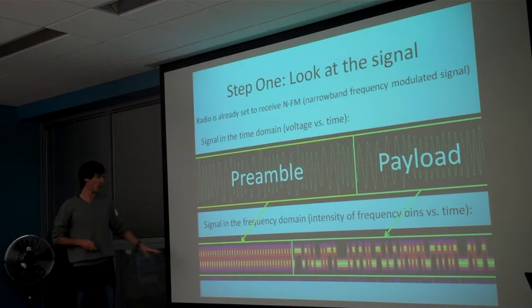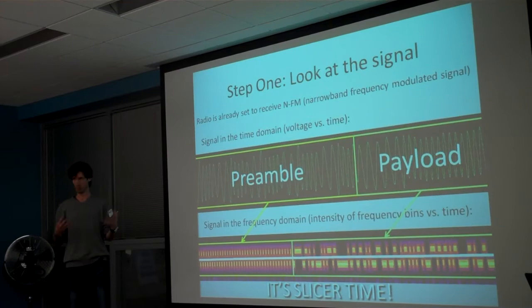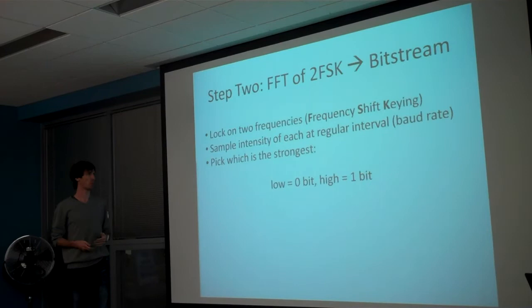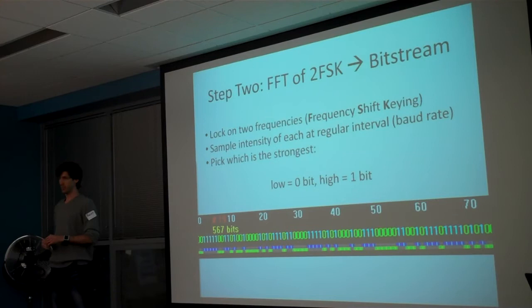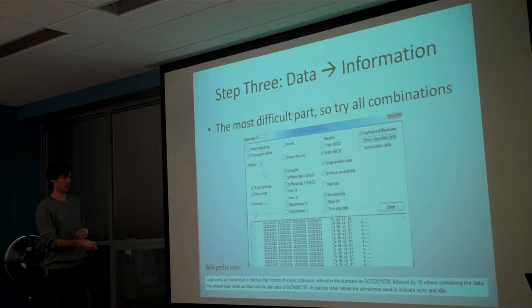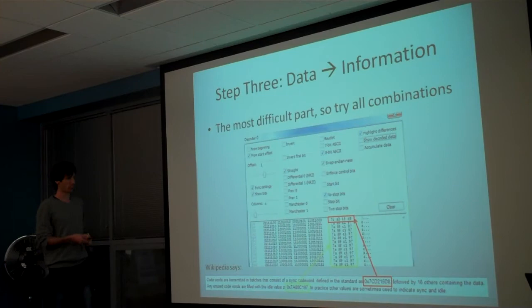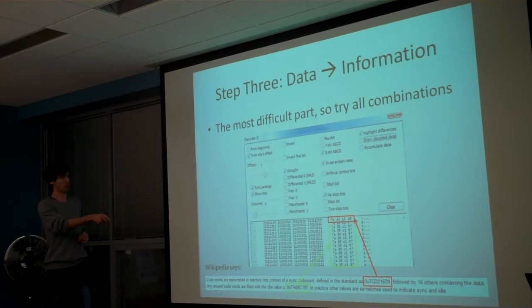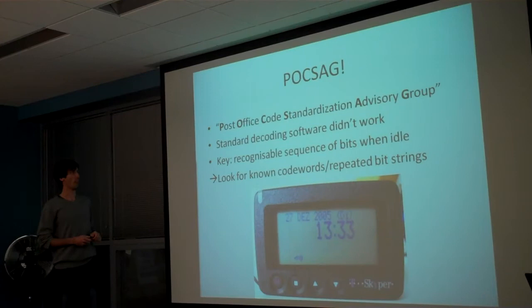The preamble is very important with bursty transmissions because it allows the receiver to lock onto the signal. In the frequency domain you can see that there seem to be two distinct levels. This is a very simple form of frequency shift keying, so you can just slice through that and extract the bits at the appropriate time. Once you extract the ones and zeros, how do you interpret these bits?